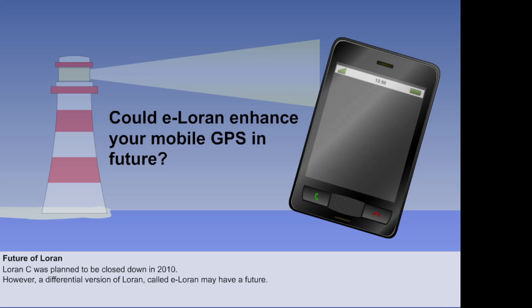Loran uses a strong signal which is difficult to jam, and Loran is an independent, dissimilar, and complementary system to other forms of electronic navigation, which helps ensure availability of navigation signals.